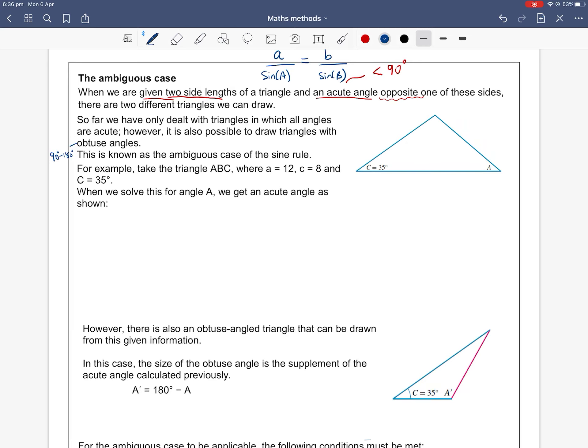For example, consider triangle ABC, where side length A is 12. So if in this triangle, this is angle A, then the side length A is the side which is opposite that angle, so that is 12. Side C is 8, so that's opposite angle C. So that side here is 8. And angle C is 35 degrees.